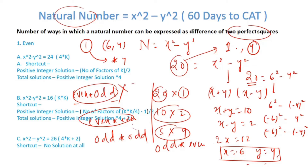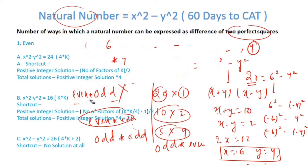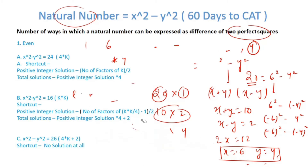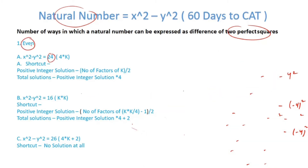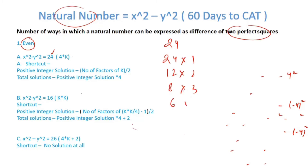Now let's take examples to understand the shortcuts. We'll first talk about even numbers of the form 4k. Take 24 for example. I can express 24 as 24×1, as 12×2, as 8×3, and as 6×4.